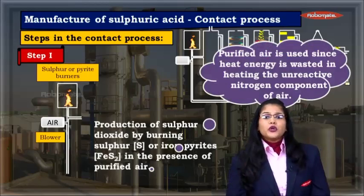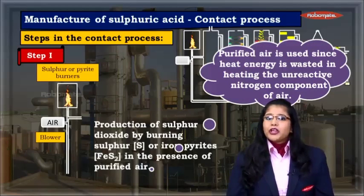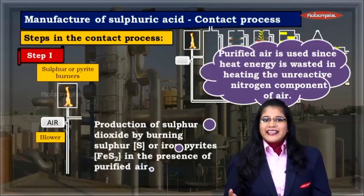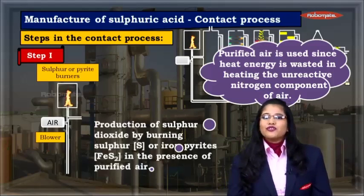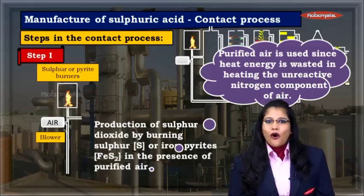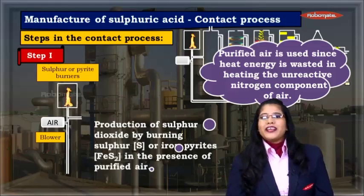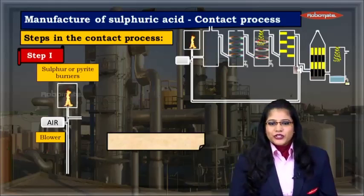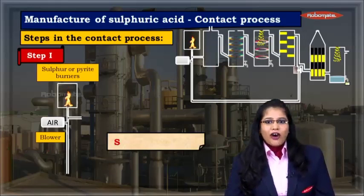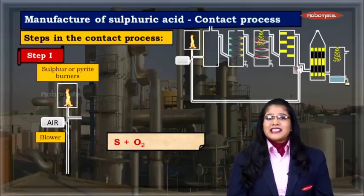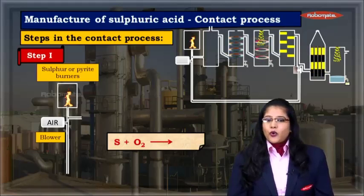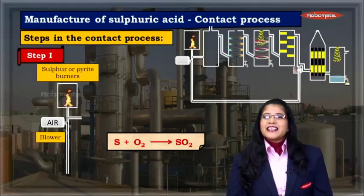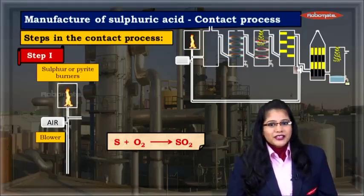Now why do we use purified air? Because heat energy would be wasted in heating the unreactive nitrogen component of the raw air. That is why we purify the air and then use it. The first reaction occurring when using sulphur: S + O₂ gives SO₂. As we can see, this reaction is self-balanced.